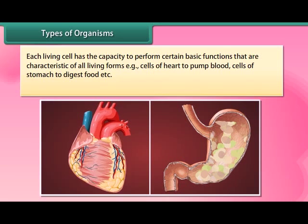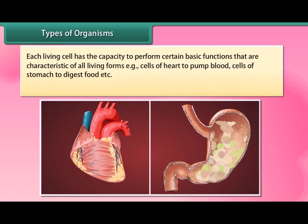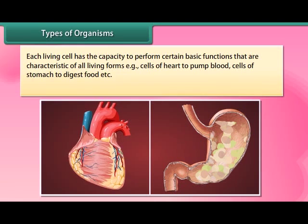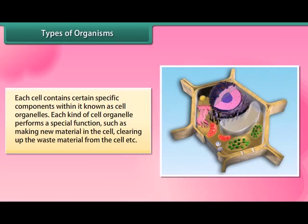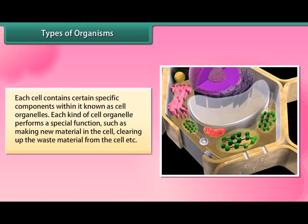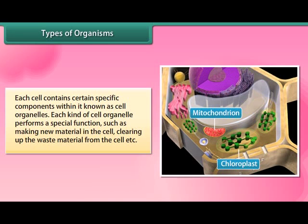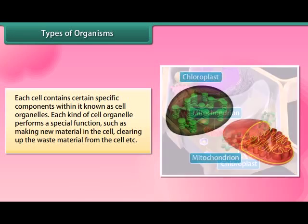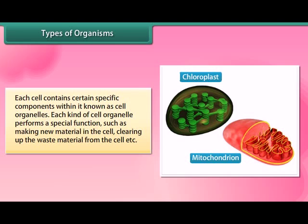Each living cell has the capacity to perform certain basic functions characteristic of all living forms — for example, cells of the heart pump blood and cells of the stomach digest food. Each cell contains certain specific components known as cell organelles, and each kind of organelle performs a special function, such as making new material in the cell or clearing up waste material.